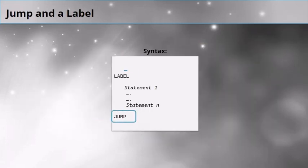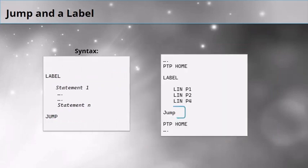A jump and a label are two commands that work hand-in-hand. The jump moves the cursor to a new location in the program. The label is the destination for the jump.